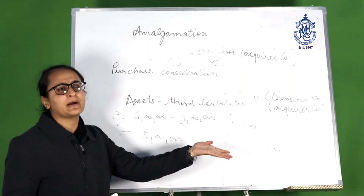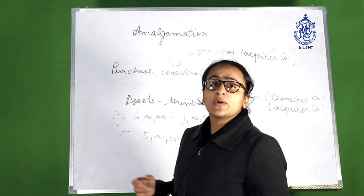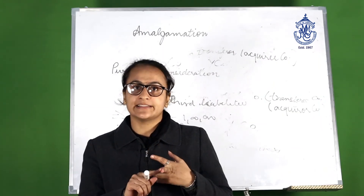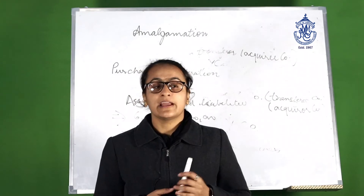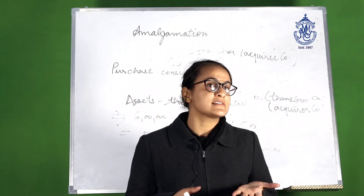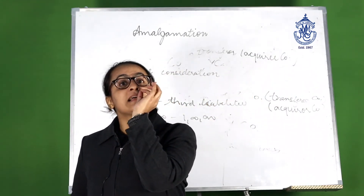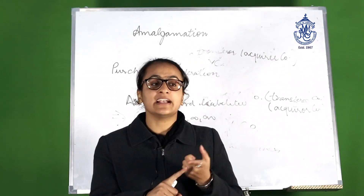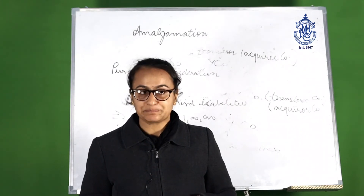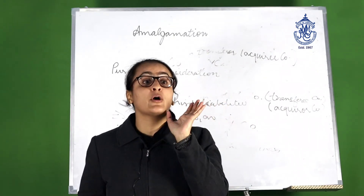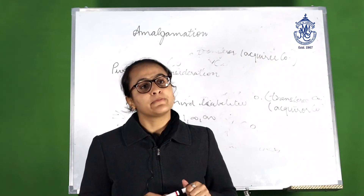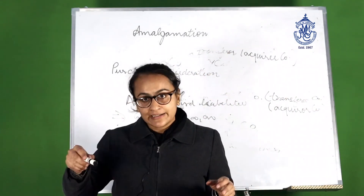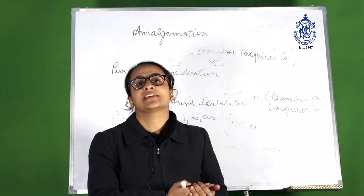The third method is the net payment method — we fix certain forms of payment such as shares, securities, cash, or any other kind, without considering the assets and liabilities of the acquiree company. The fourth method is the swap ratio method, also called the intrinsic value method. Intrinsic value is the amount available for equity shareholders after payment to debentures, tax, and preference dividend, divided by the number of equity shares. Shares of the transferor company are valued at intrinsic value and purchase consideration is calculated accordingly.